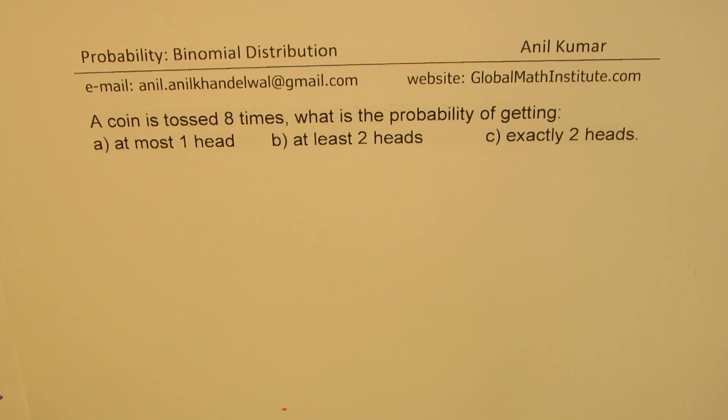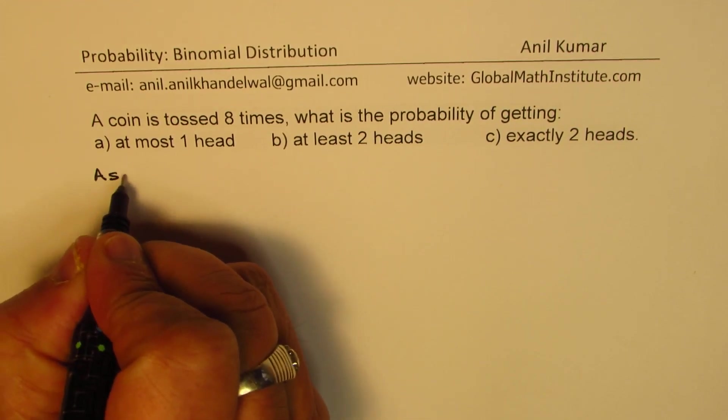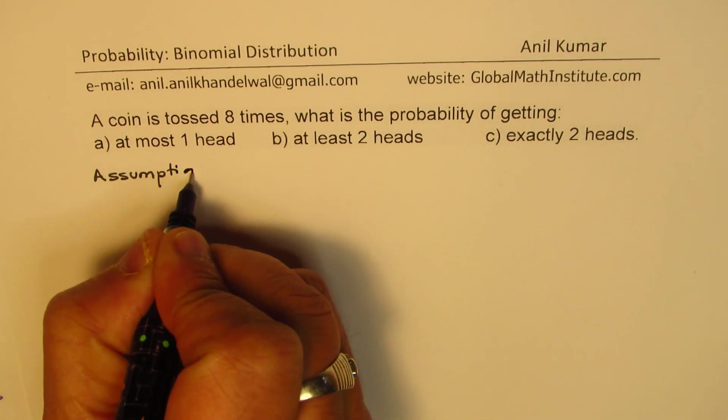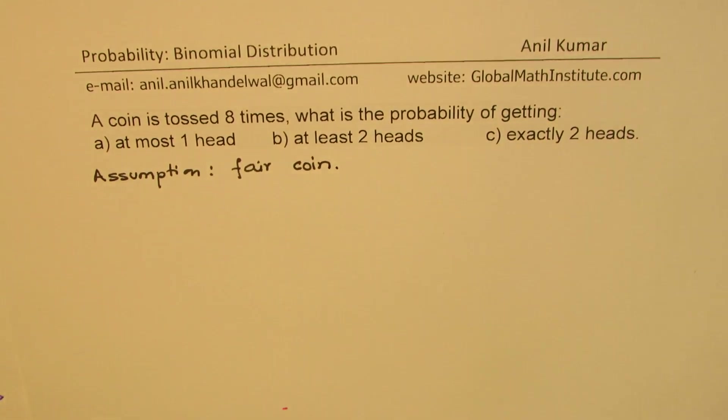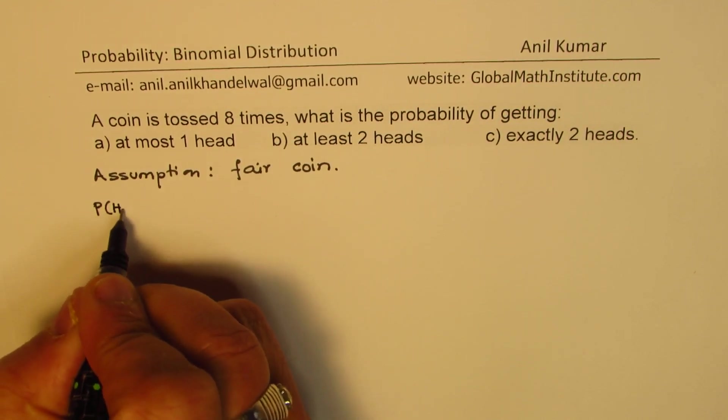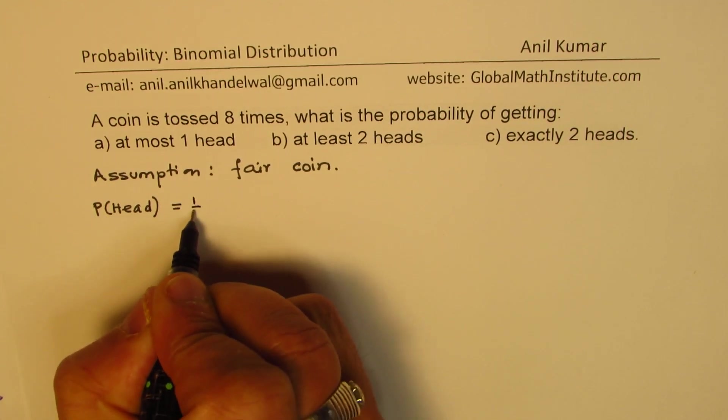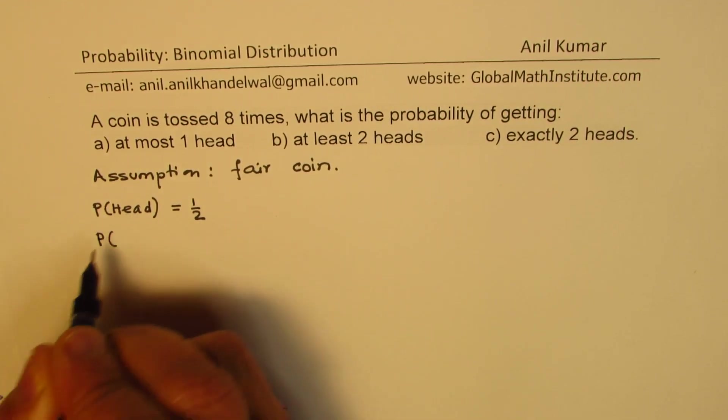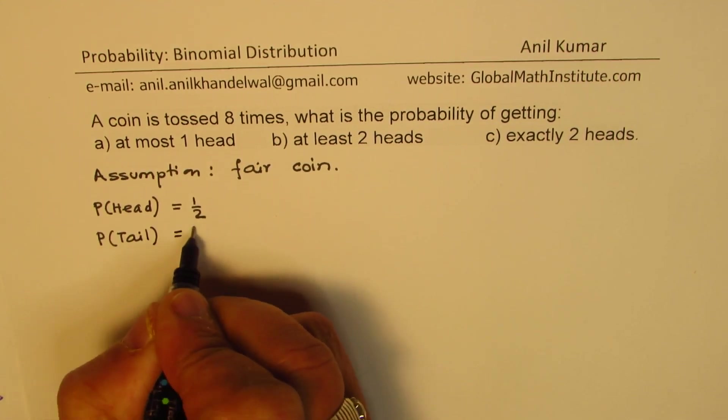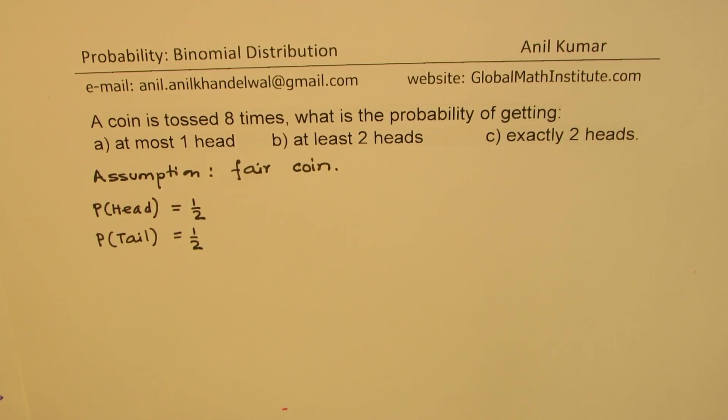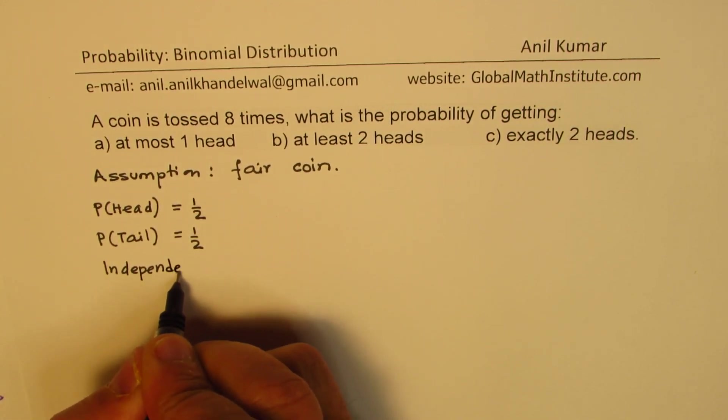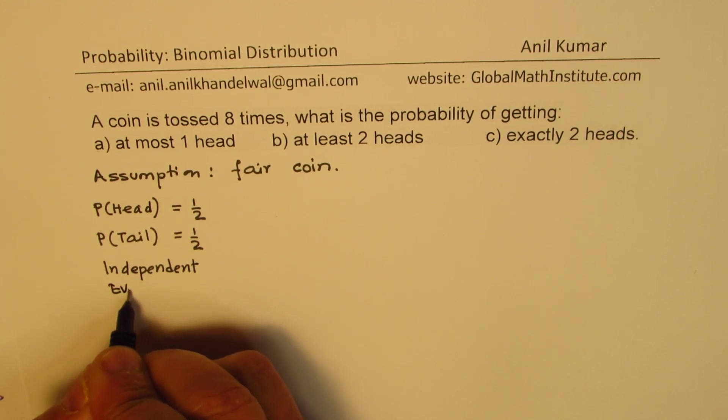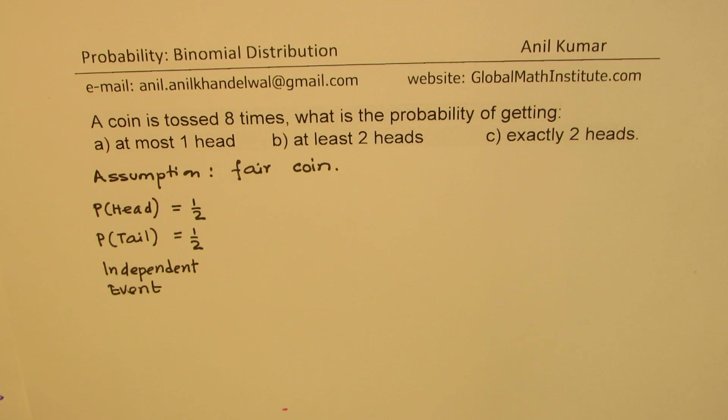So we'll assume a few things here. Our assumption is that we have a fair coin. That means the probability of getting a head is half and probability of not head, which is tail in this case, will also be half. We also realize that every event is independent event, so the probability will not change. It will remain the same for every toss.